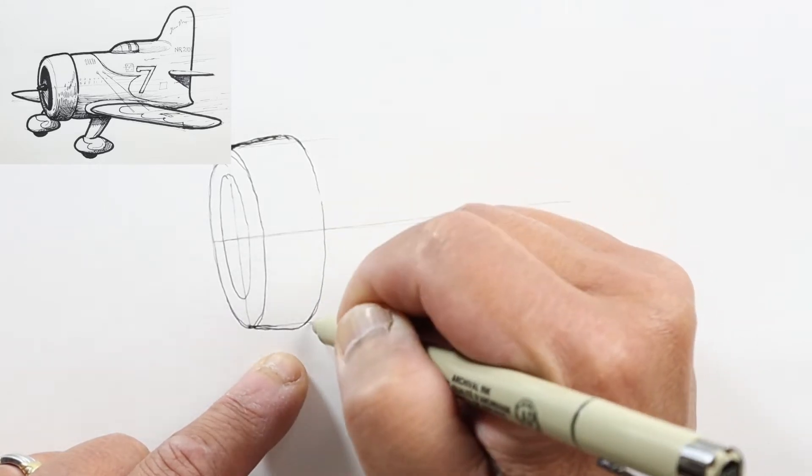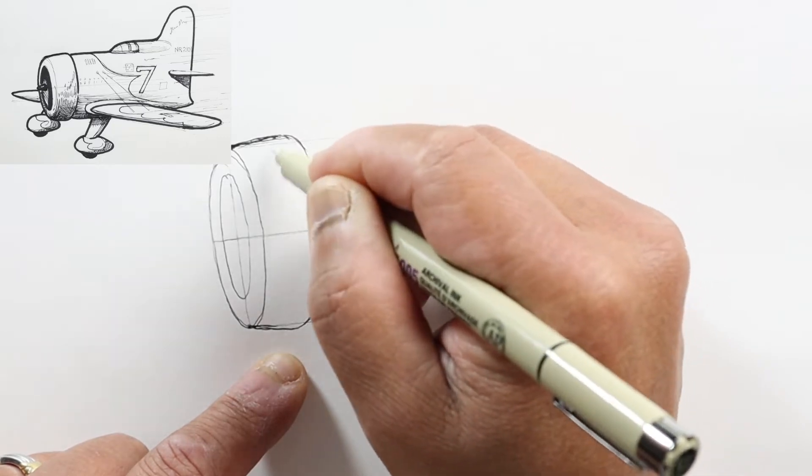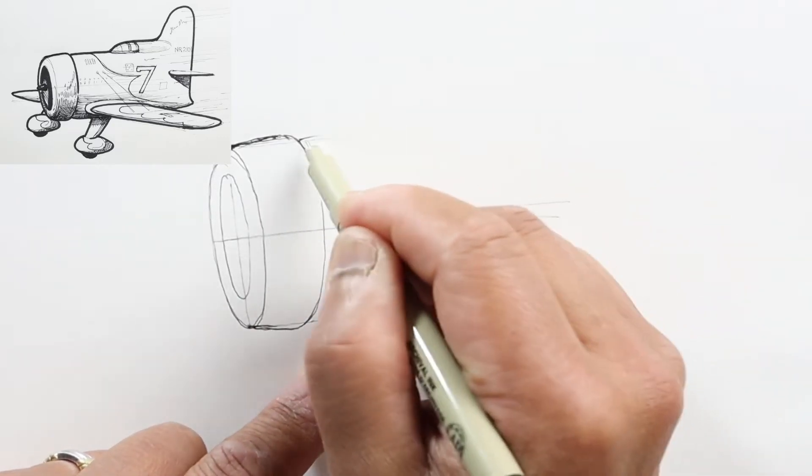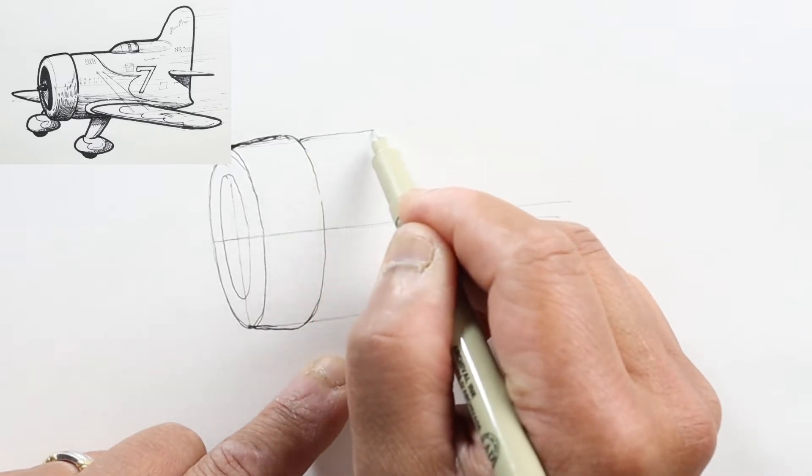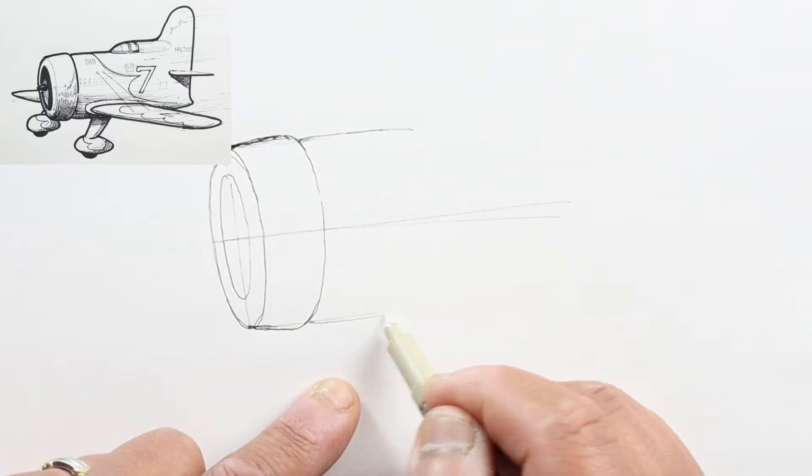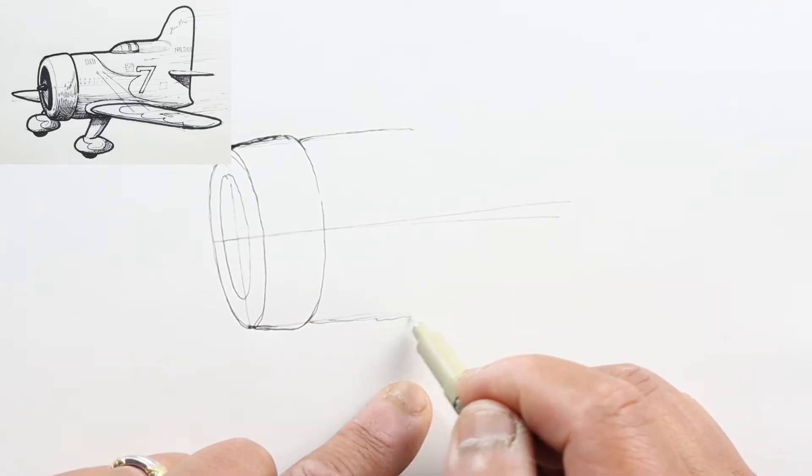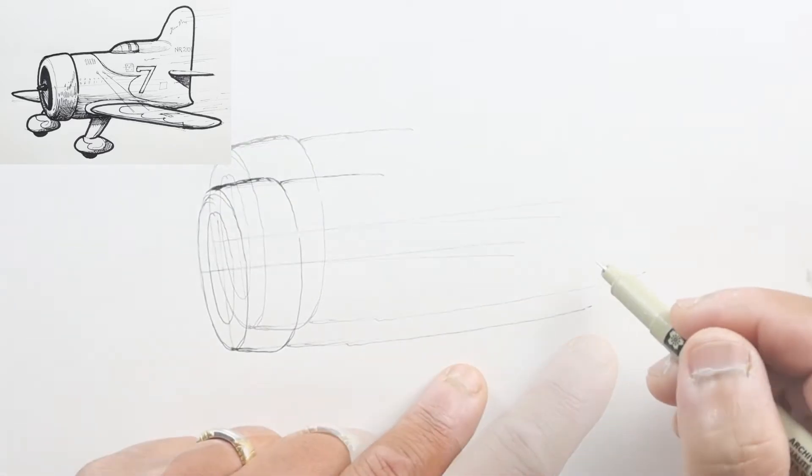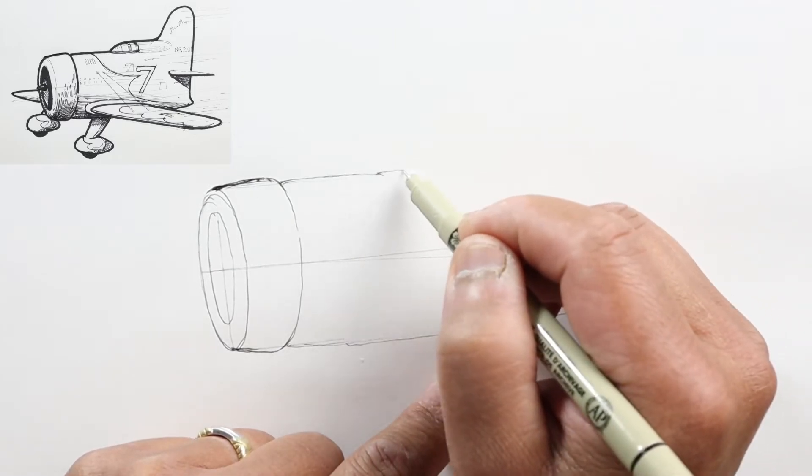This is the right side of another oval. Let's continue backwards with the fuselage. This line goes back about this far, and right here is where the pilot would sit.